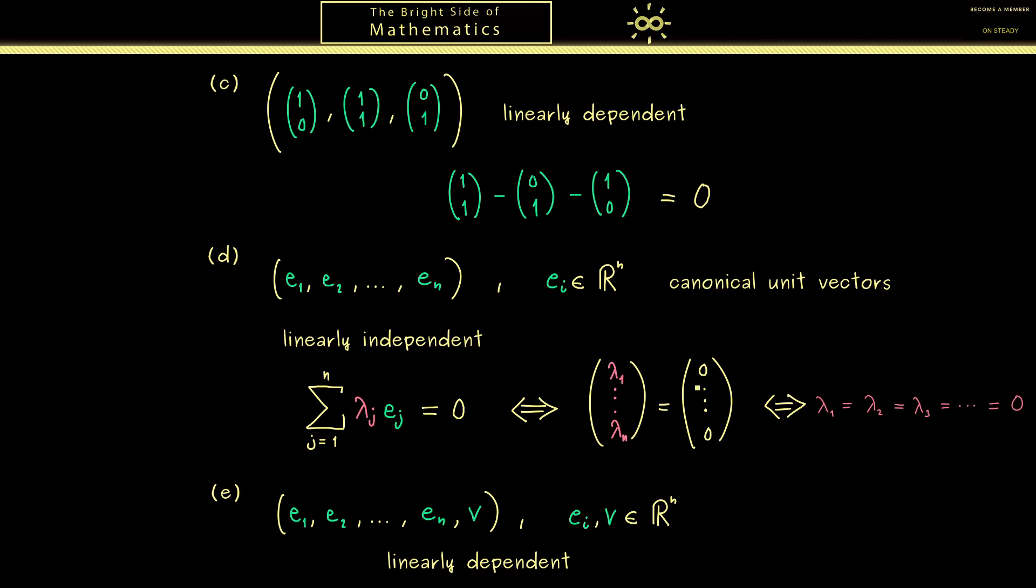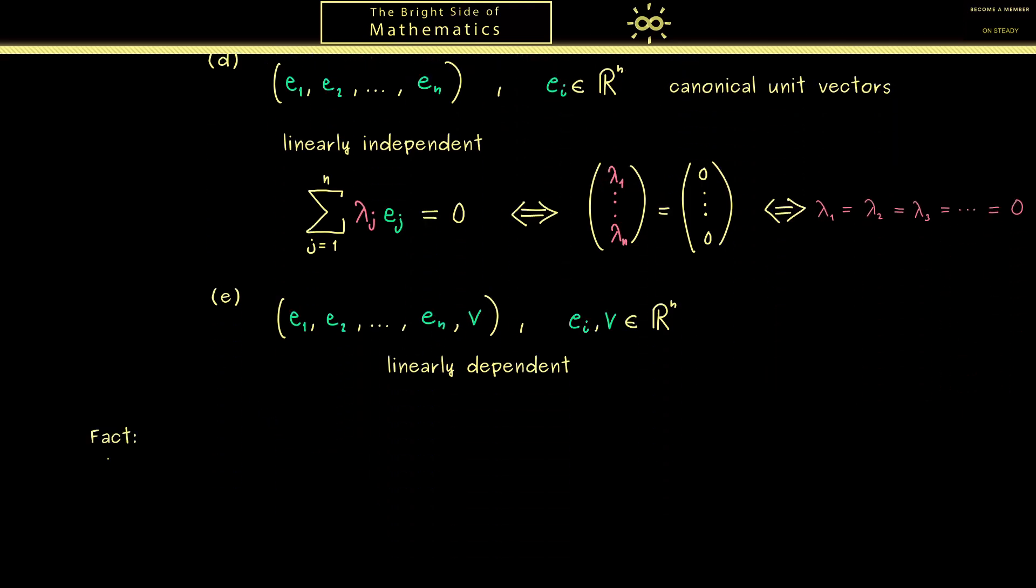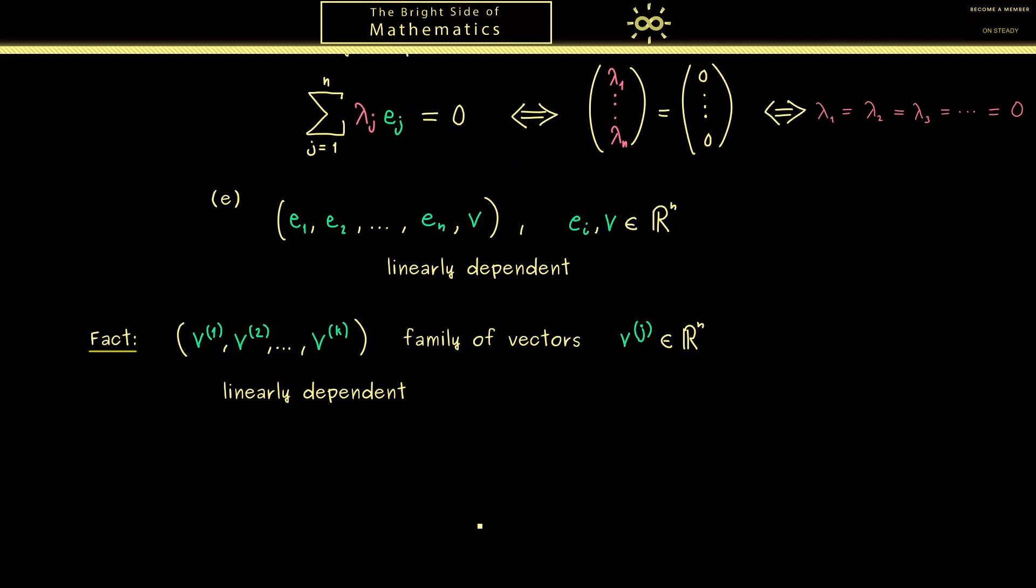Now, with these examples in mind, I think we can close this video with another important fact. So there I want to tell you how we can also characterize the term linear dependence. Therefore, as always, let's take a set or a family of k vectors that come from R^n. And now we have an equivalence, that this family is linearly dependent if and only if we find an index l, a vector v_l in the family, that we can omit without changing the span.